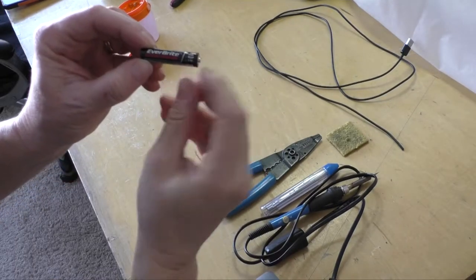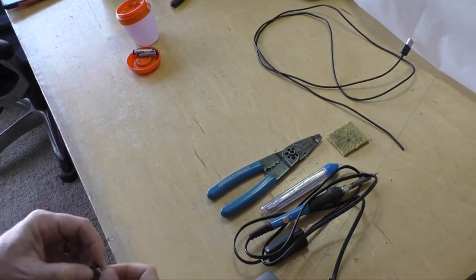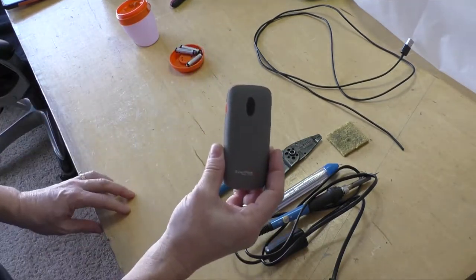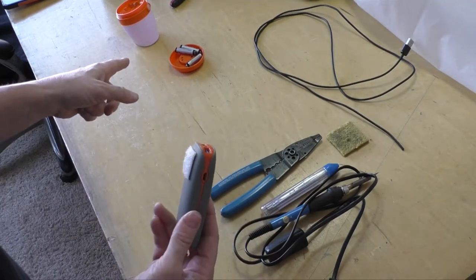Each AAA battery is 1.5 volts. There's three of them in here. These battery packs output 5 volts. So that's going to be close enough where this doesn't wreck the light.